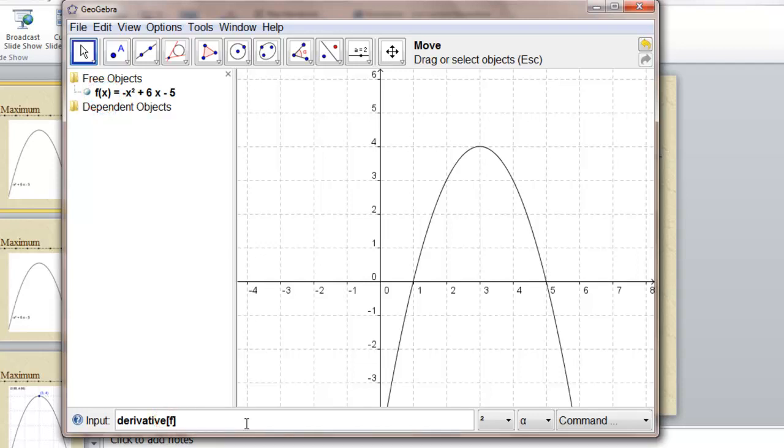Give me the derivative of f please. And that straight line is the slope function. It represents the slope of f at every x value. Where is it zero?